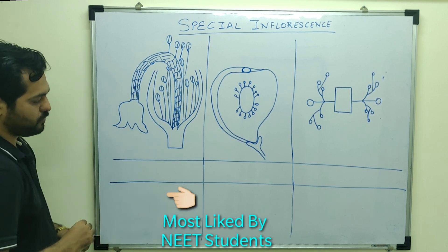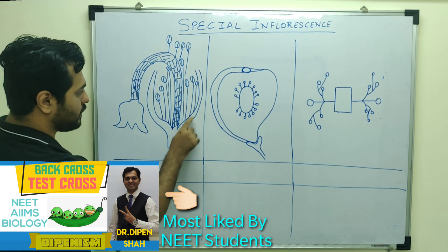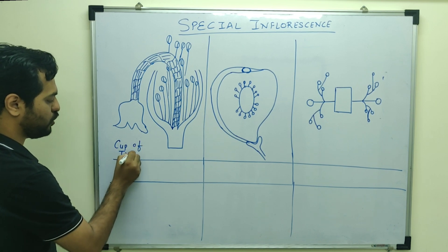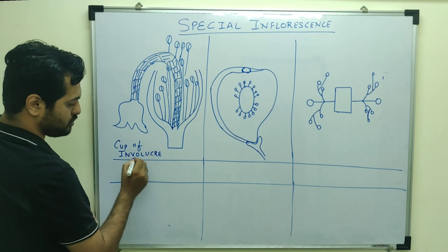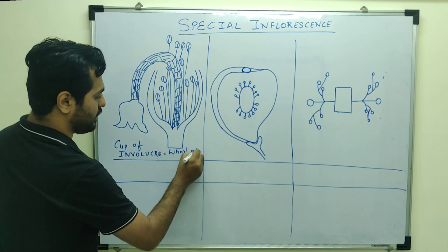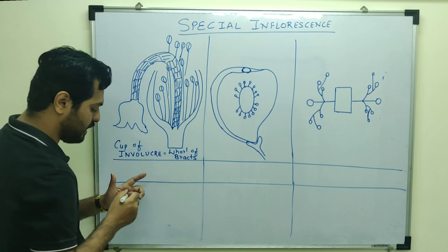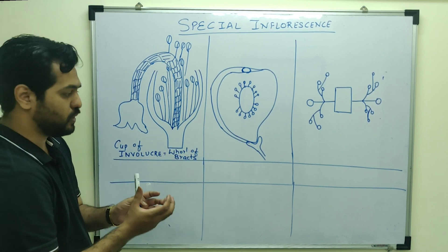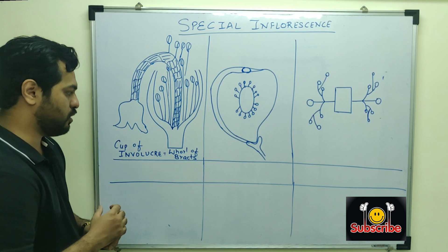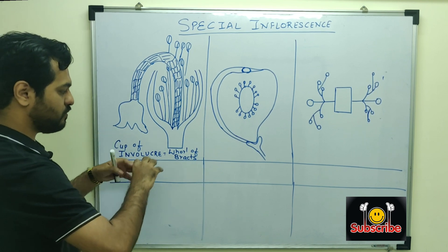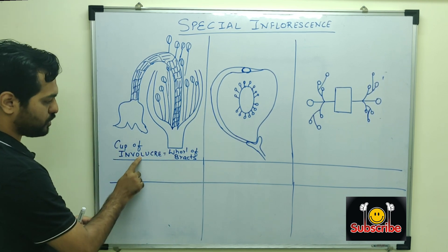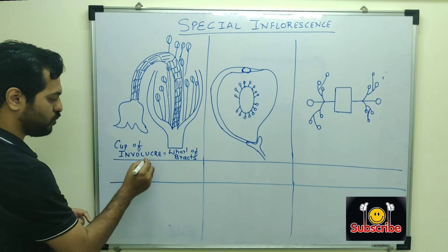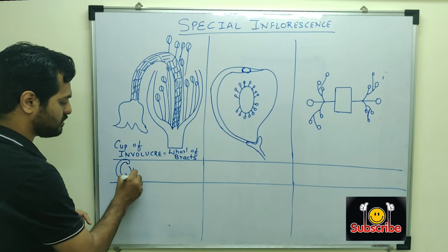If you observe the first type, this entire cup-like structure is known as the cup of involucre. Involucre means the wall of bracts. Bracts is the leaf-like structure. And this wall of bracts is known as the involucre, and this involucre shape is cup-shaped.